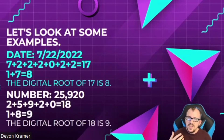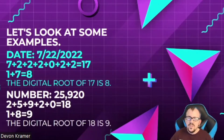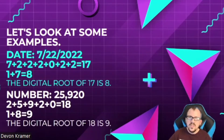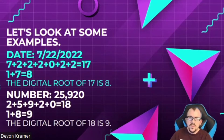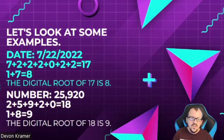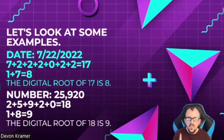Let's take a look at some examples. We're going to take a date: 7/22/2022. We're going to add all the digits together — seven plus two plus two plus two plus zero plus two plus two — that's going to be 17. Then one plus seven is going to be eight, because 17 still has two digits. I like to imagine just crushing them together — keep crushing them until you have one singular digit left.